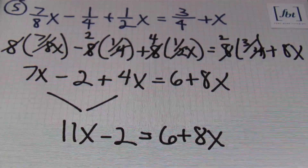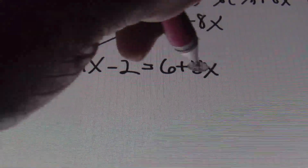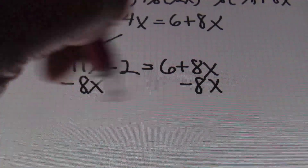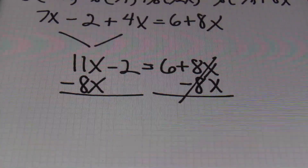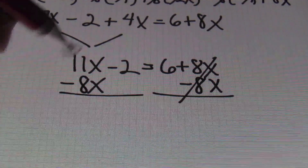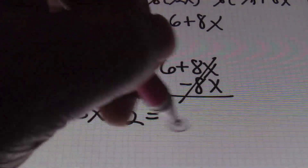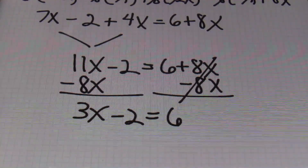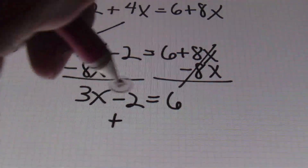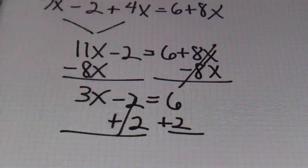After simplifying, look to see if you can combine any like terms on either side of your equal sign. Seven x and four x combine to give me 11x minus two, which equals six plus eight x. Then I subtract eight x from both sides, giving me 11x minus eight x equals three x on the left side, minus two, which now equals six.